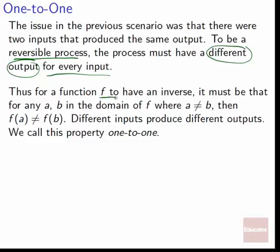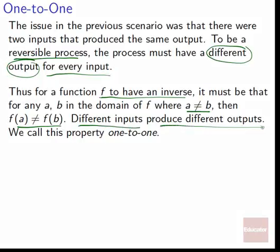So for a function f to have an inverse, it has to be that for any a, b in the domain where a is not the same as b — where a and b are distinct from each other — then f(a) does not equal f(b). So if a and b are different, then the function's outputs on a and b are different as well. Different inputs going into a function have to produce different outputs. We call this property one-to-one.